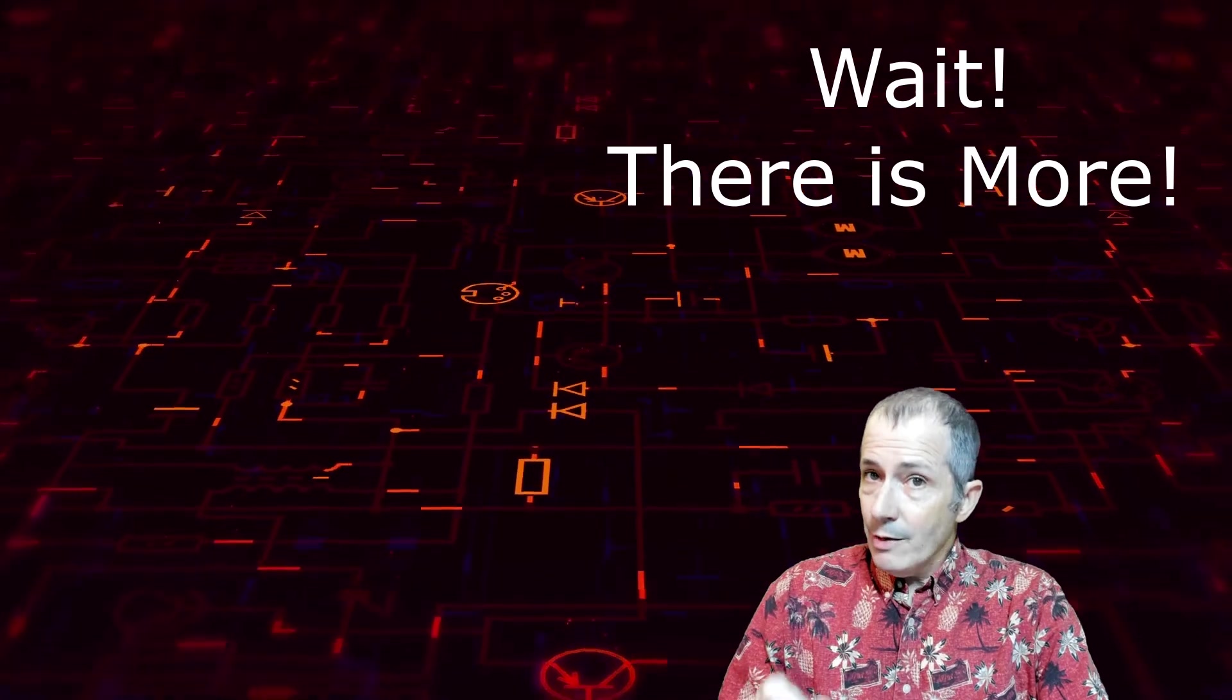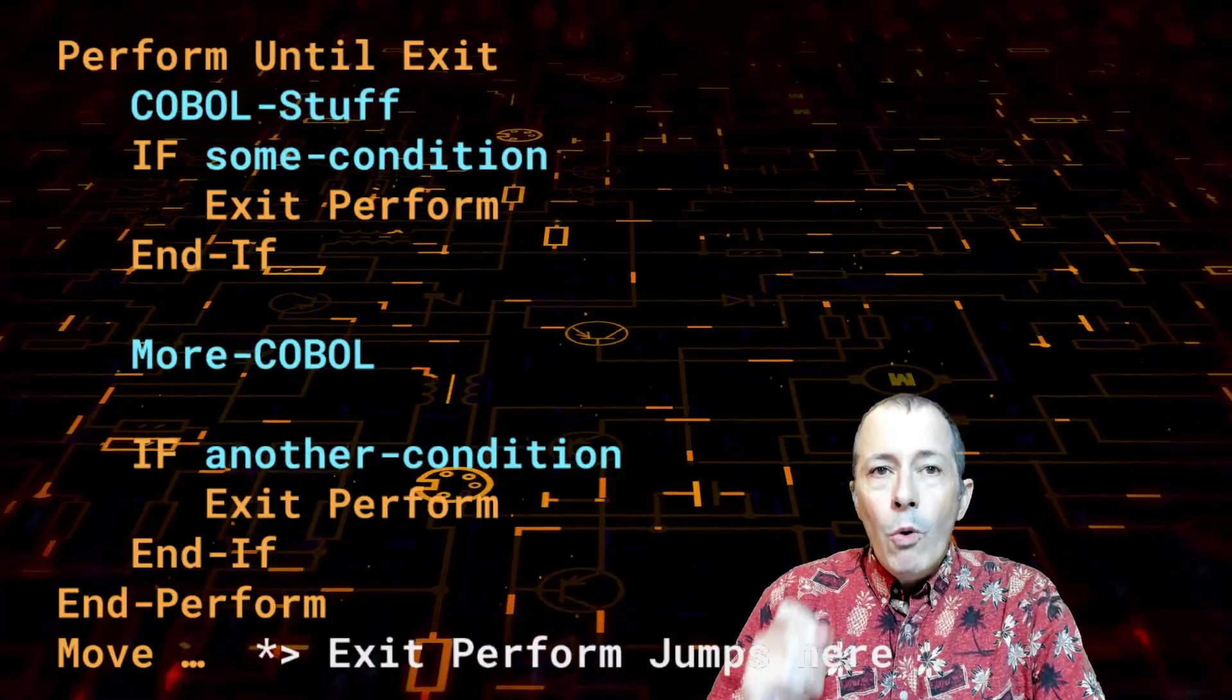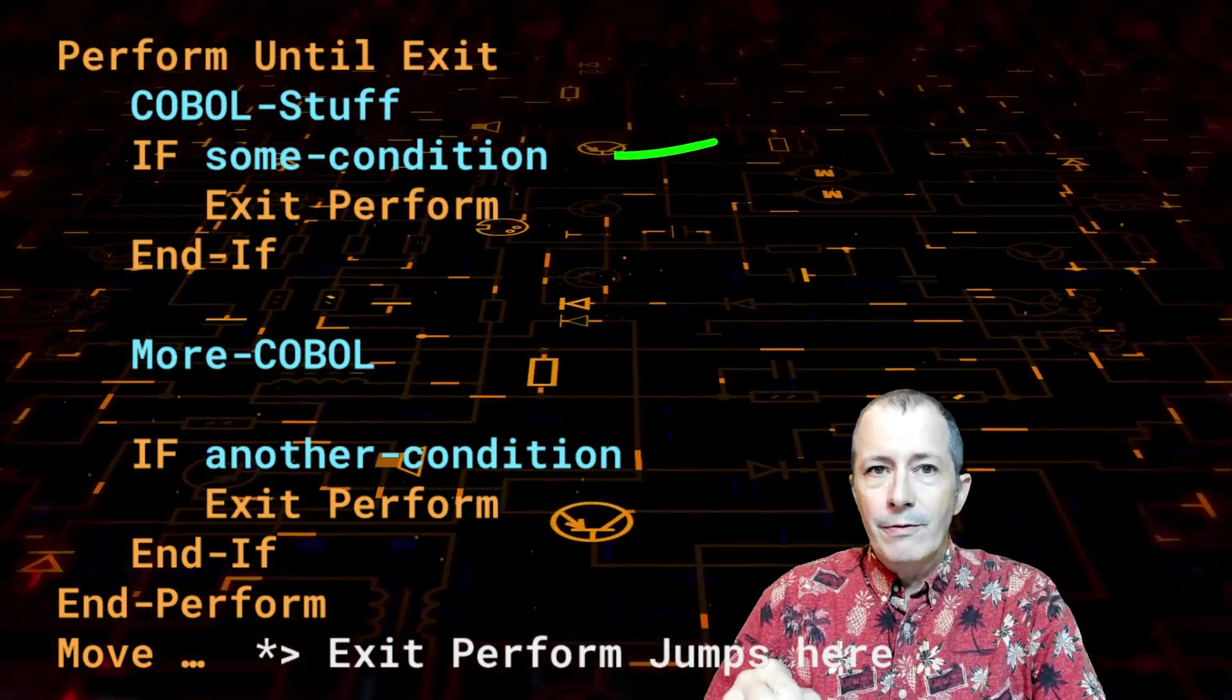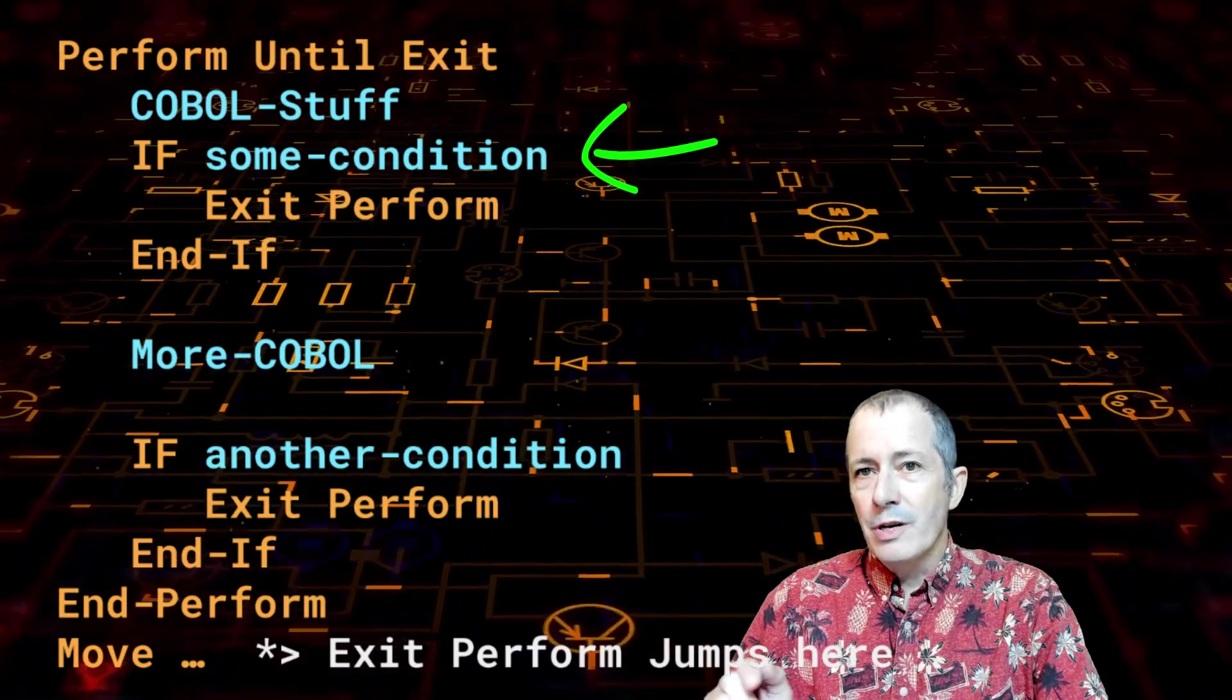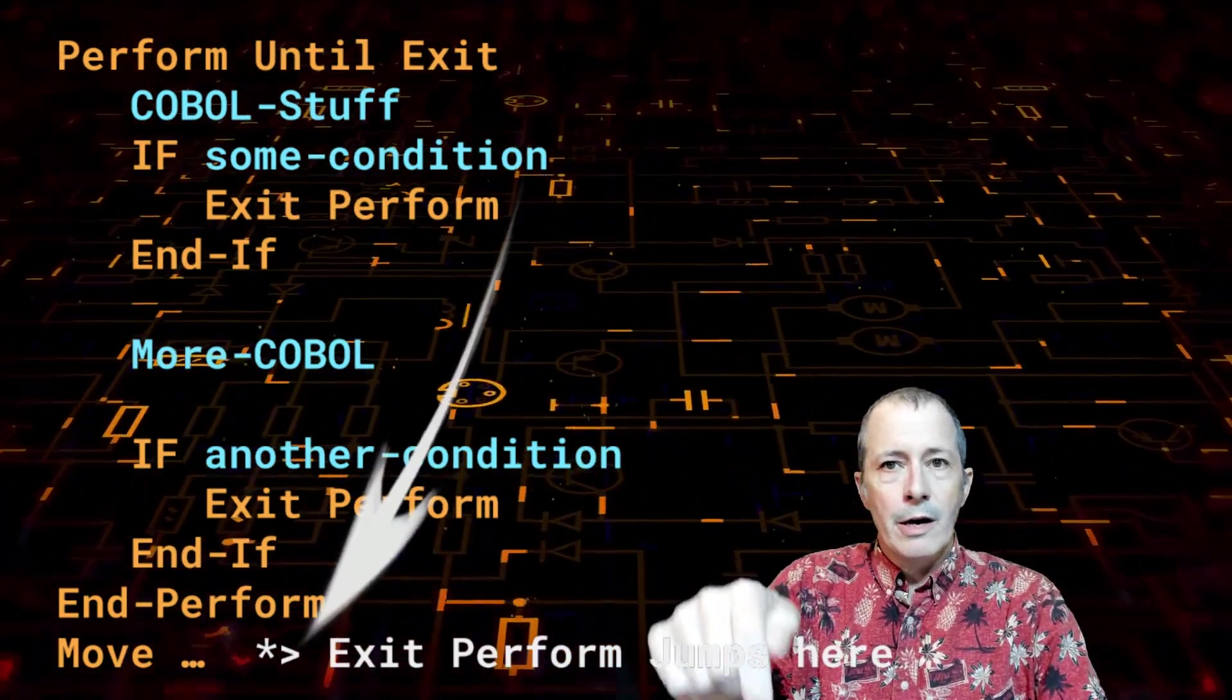With that said, we can make one more tweak to this code. The more COBOL lines do not have to be within the else. If some condition is true, the exit perform jumps to the move statement outside of the loop.